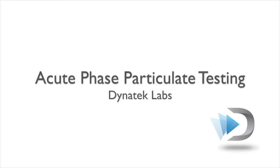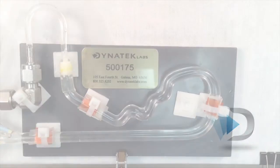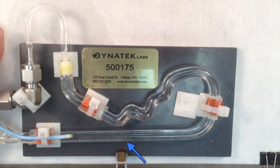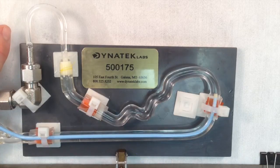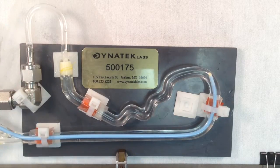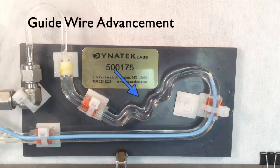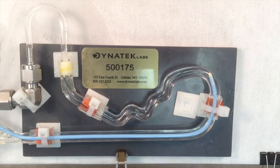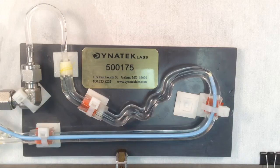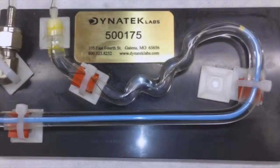Here is our process. To begin, the guide catheter is advanced down the loop until it reaches the tortuous path. Next, the guide wire is advanced through the tortuous path and curved mock vessel. This tortuous path complies with ASTM requirements of acute phase stent testing, and the mock vessel simulates a coronary artery.